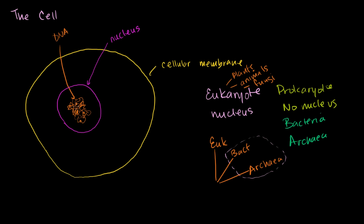We have our DNA. We know it gets transcribed into mRNA. That mRNA leaves the nucleus and gets translated into proteins at the ribosomes. Ribosomes are these little complexes that can be floating all over the cell, and they can also be attached to other membrane structures.